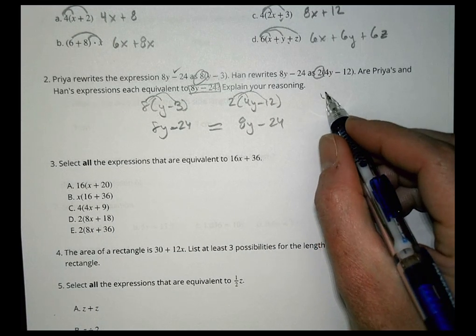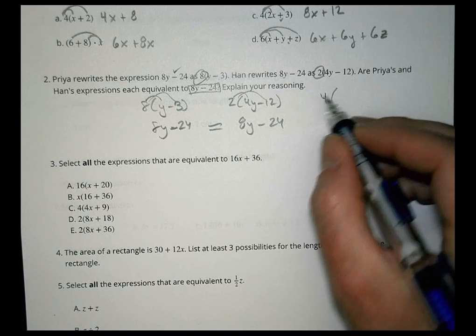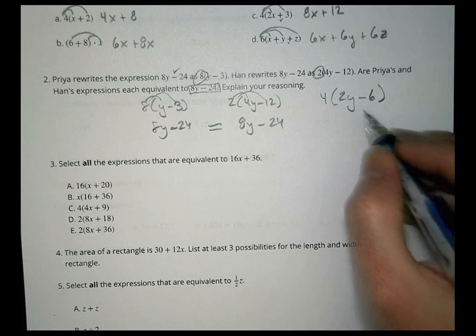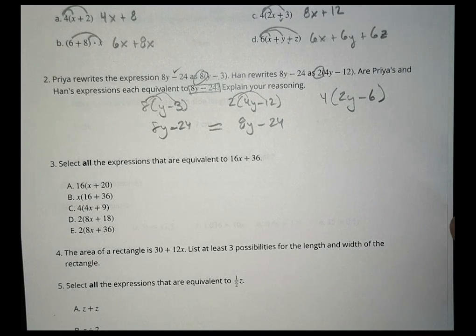When you distribute them, we see that they are indeed the same. So they are both equivalent expressions. The difference is that Priya factored out an 8 and Han factored out a 2. Those are both fine. They could also have factored out a 4 because 4 goes into 8 to get 2, and 4 goes into 24 to get 6. That would actually be another equivalent expression.